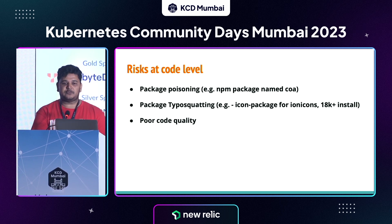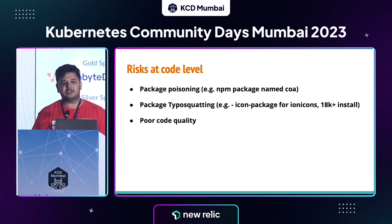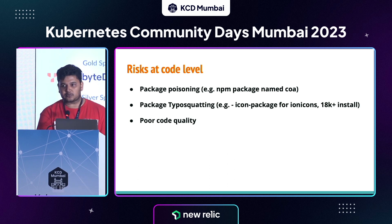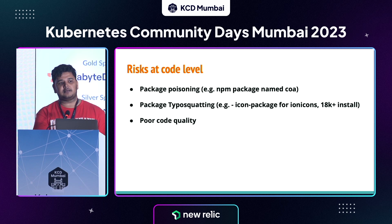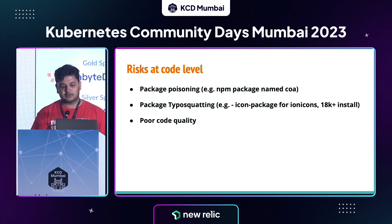The third risk at the code level is poor code quality. If developers themselves write poor quality code, that can also be exploited by attackers.